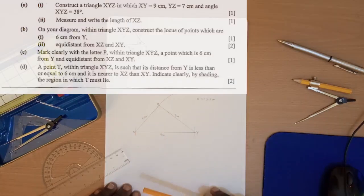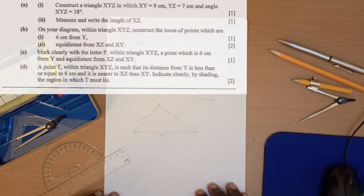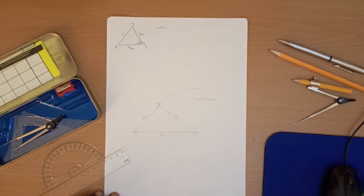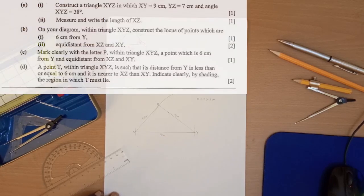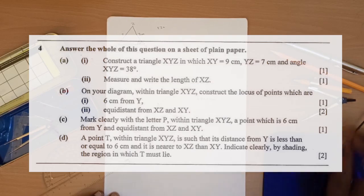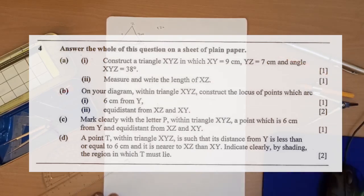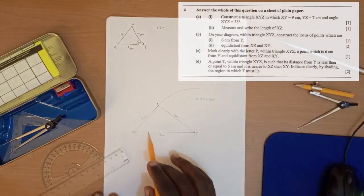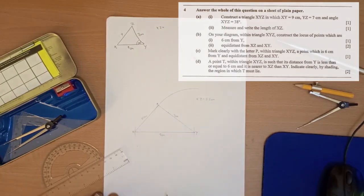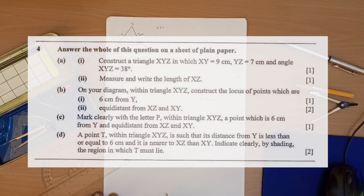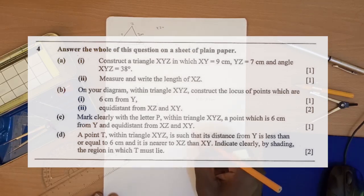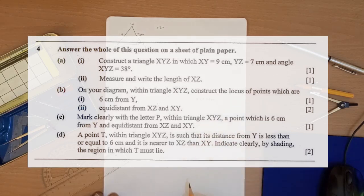We have constructed the first part of question four — constructing triangle XYZ. We've also answered the second part, which said measure and write the length of XZ. Now let's go to part B. Part B says: on your diagram, within triangle XYZ, construct the locus of points which are (1) six centimeters from Y, and (2) equidistant from XZ and XY.